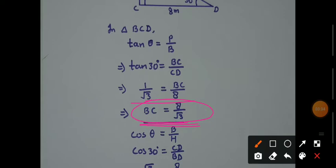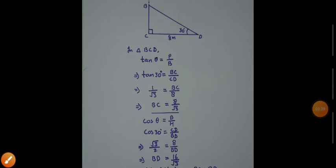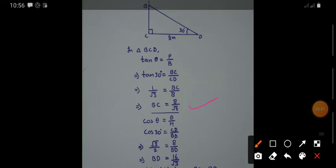Now we have BC. Now we need BD, this length. We will use the other side. We will select CD because it is 8 meters. This is base and that is hypotenuse. Base upon hypotenuse is cos theta.